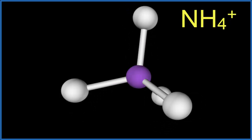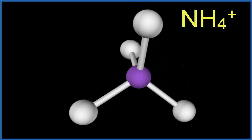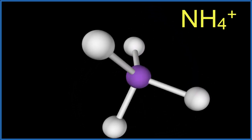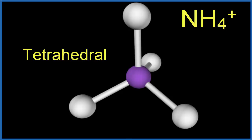If we look at the ammonium ion, we have those four hydrogens attached to the central nitrogen. We end up with a different molecular geometry. This molecular geometry is called tetrahedral.